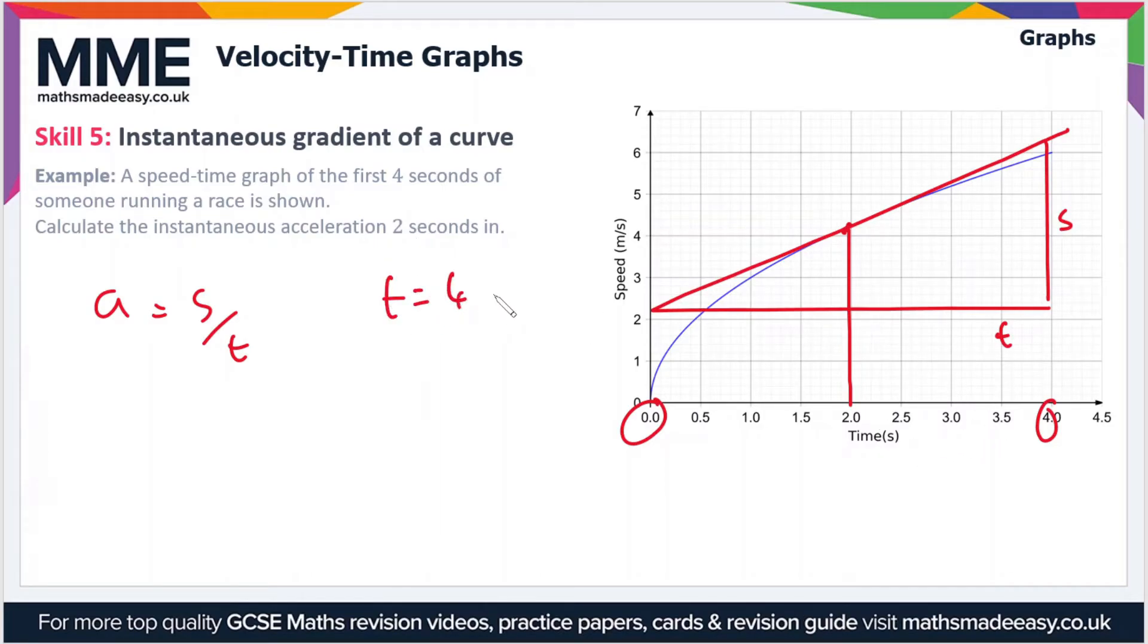The time is four seconds. Now if we look at the speed, it's slightly more tricky to work out. Here at the start of the triangle, we've got a speed of about 2.2 meters per second. Going up to the top, if I draw a straight line across...